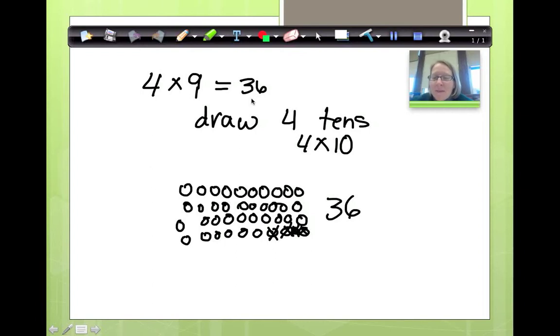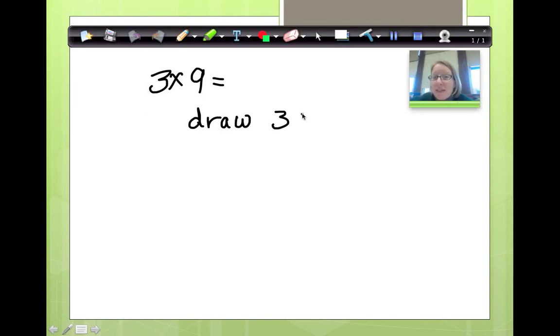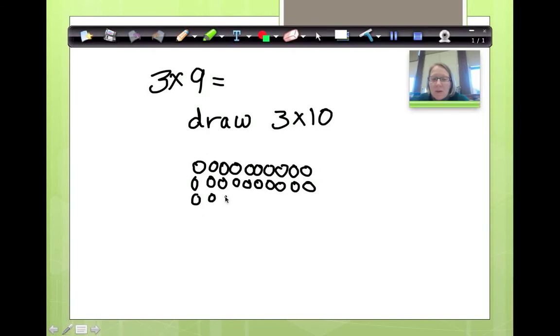Okay. One more time. Let's do 3 times 9. Okay, now, I'm not going to draw 3 9's. I'm drawing 3 10's. Okay? And then I'm going to mark off the extras. Ready? 1, 2, 3, 4, 5, 6, 7, 8, 9, 10. 1, 2, 3, 4, 5, 6, 7, 8, 9, 10. 1, 2, 3, 4, 5, 6, 7, 8, 9, 10.